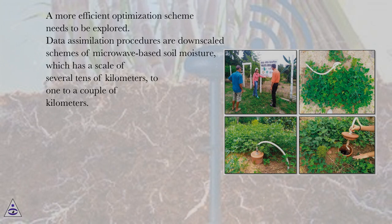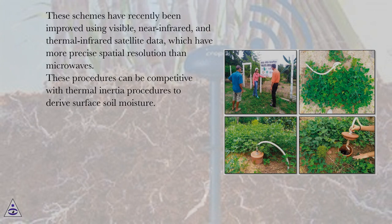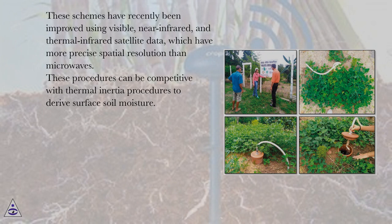Data assimilation procedures are downscaled schemes of microwave-based soil moisture, which has a scale of several tens of kilometers, to one to a couple of kilometers. These schemes have recently been improved using visible, near-infrared, and thermal-infrared satellite data, which have more precise spatial resolution than microwaves. These procedures can be competitive with thermal inertia procedures to derive surface soil moisture.